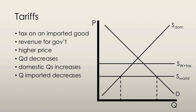The higher price also induces domestic producers to produce more, so the domestic supply increases. The new domestic quantity supplied is at the point where the new world supply curve intersects the domestic supply curve.